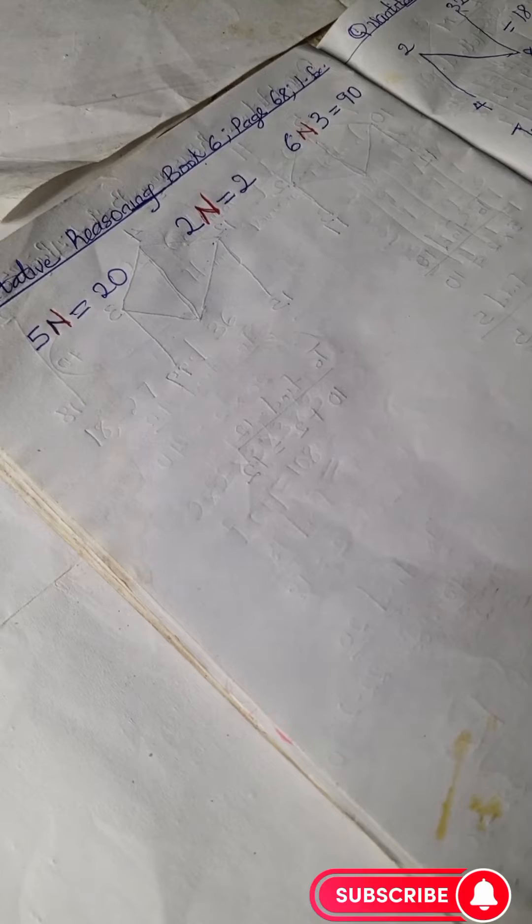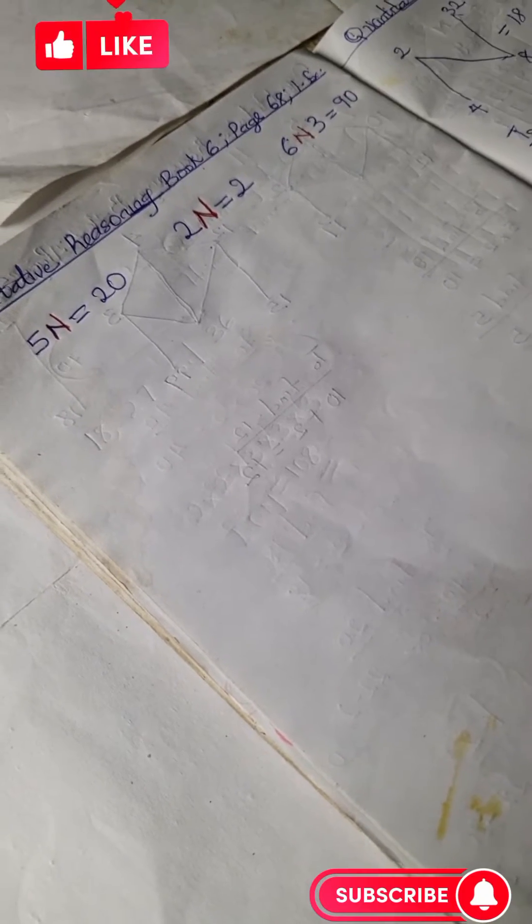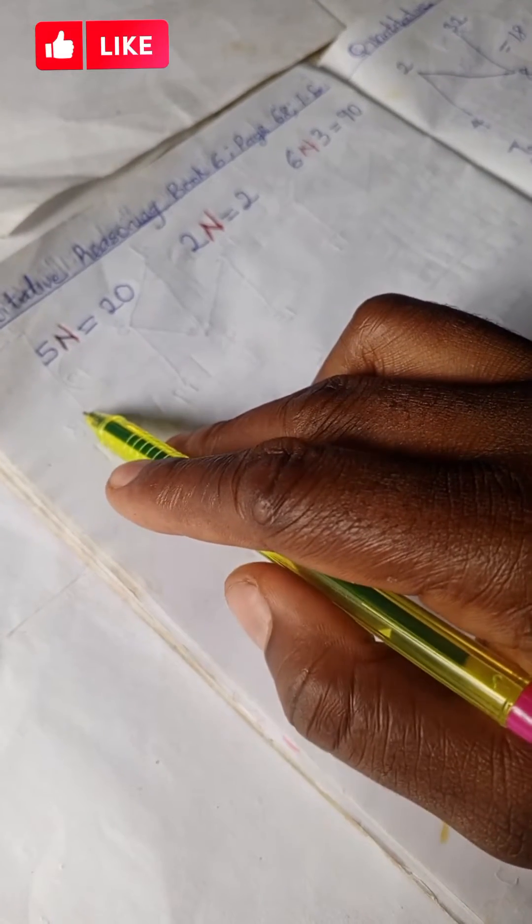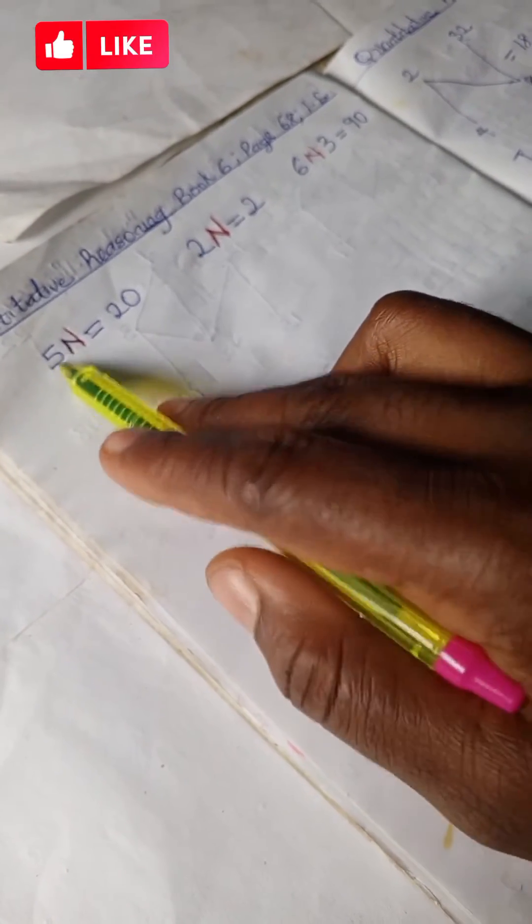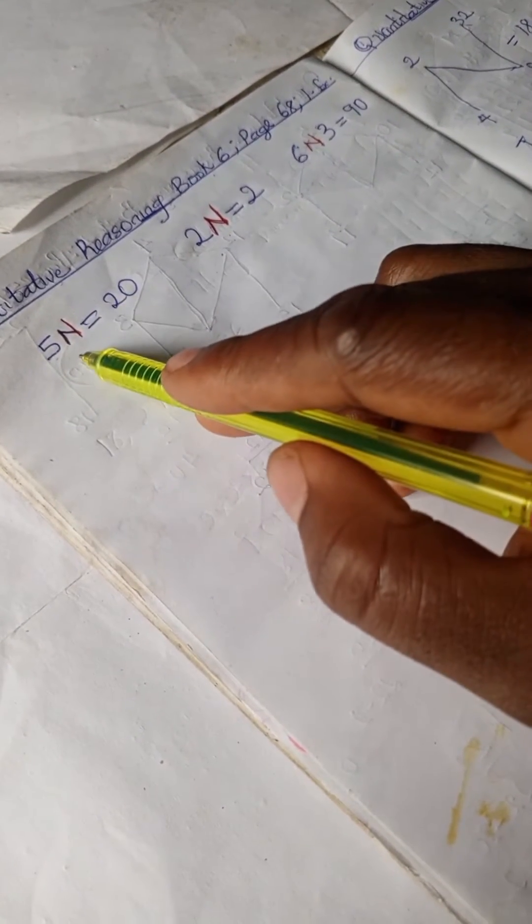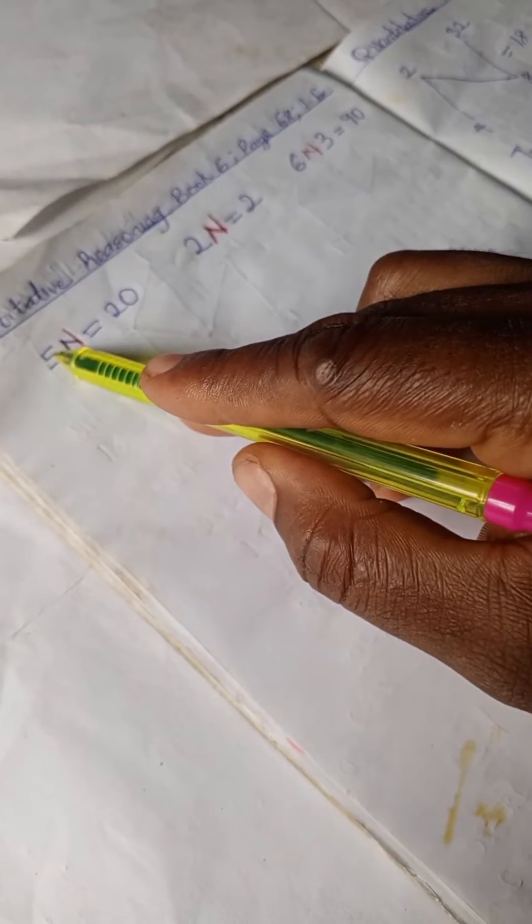Don't forget to subscribe to this channel for more quantitative and mathematics problems and solutions. So looking at this, how do we unravel this? When we subtract 1 from 5 we have 4, and multiply 4 with 5 we have 20.